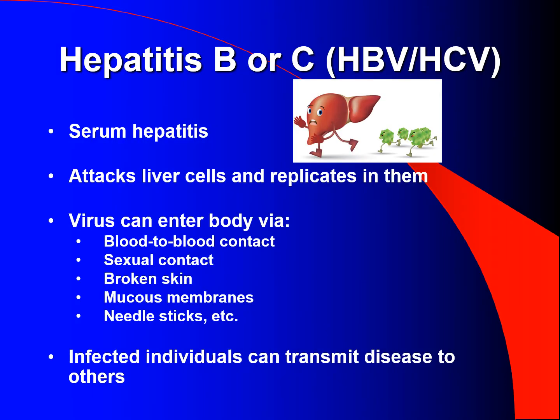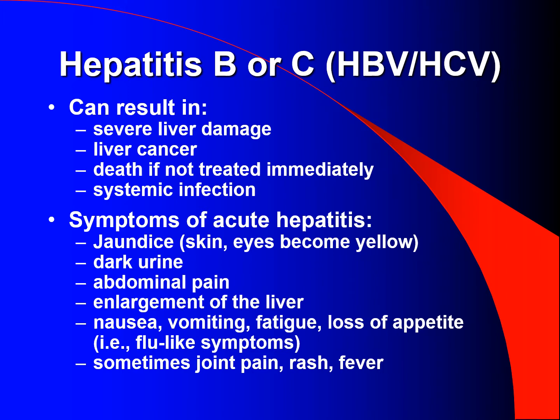Hepatitis B and C (HBV/HCV), also known as serum hepatitis, attack liver cells and replicate in them. The virus can enter the body via blood-to-blood contact, sexual contact, broken skin, mucosal membranes, needle sticks, etc. Infected individuals can transmit the disease to others. It can result in severe liver damage, liver cancer, or death if not treated. Symptoms of acute hepatitis include jaundice (skin and eyes becoming yellow), dark urine, pain, enlargement of the liver, nausea, vomiting, fatigue, loss of appetite, and sometimes joint pain, rash, and fever.